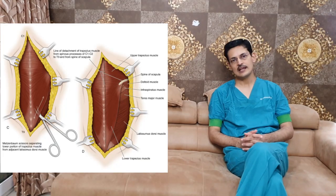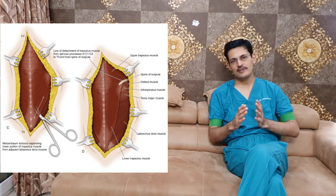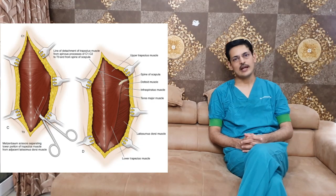When a patient comes in for Sprengel's shoulder, you need to discuss the condition in totality — what we can do and how we can improve them. As far as treatment is concerned, we can offer surgery. Surgery is usually offered between 3 to 8 years of age. After 8 years, surgery becomes risky due to a high chance of brachial plexus injury. The ideal time is around 4 to 5 years, when we can address it nicely.